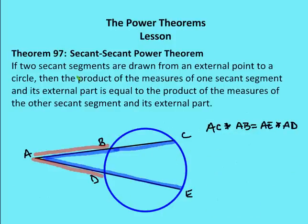The last power theorem is the secant-secant power theorem. It says if two secant segments are drawn from an external point to a circle, then the product of the measures of one secant segment and its external part is equal to the product of the measures of the other secant segment and its external part. So AC times AB equals AE times AD.